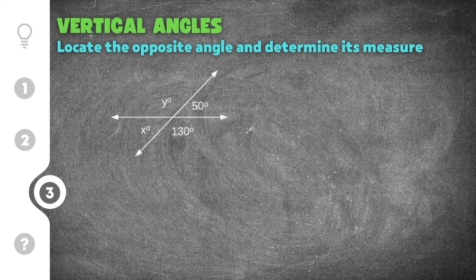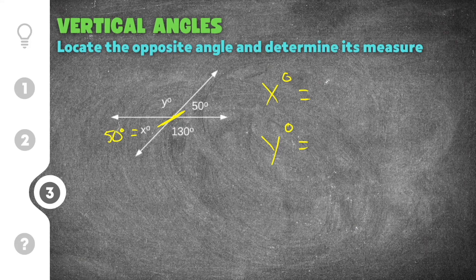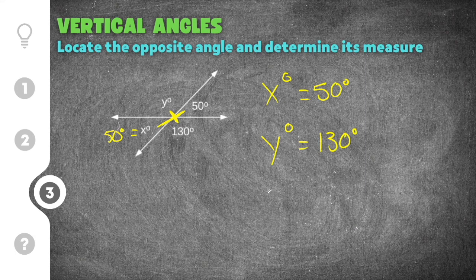Moving on to our last practice problem, number three. Two lines are intersecting forming vertical angles, and we need to find the measure of angle x and angle y. We know one angle is 50 degrees and one is 130 degrees. Diagonally across from 50 is angle x, so x is 50 degrees. The vertical angle for y is 130 degrees, so y is 130 degrees.